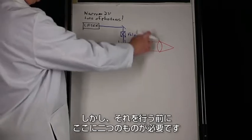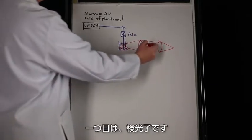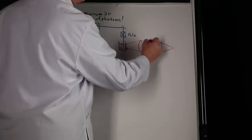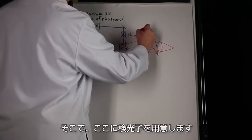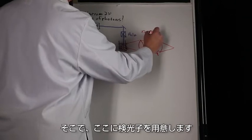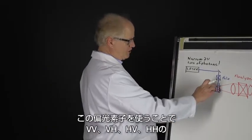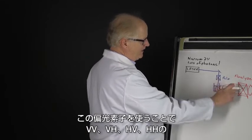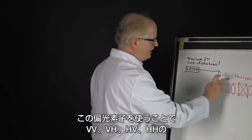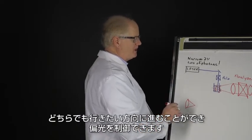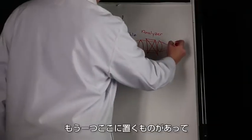But before I do, I need two things in here. The first thing I'm going to need is an analyzer, so I have in here an analyzer which is a second polarizing element which allows me to go VV, VH, HV, HH, whichever way I want to. I can now control my polarization.